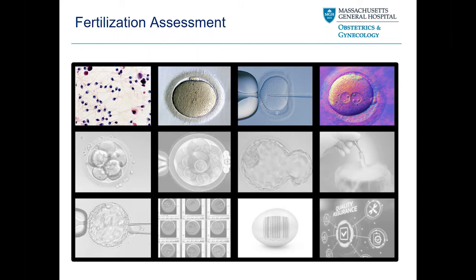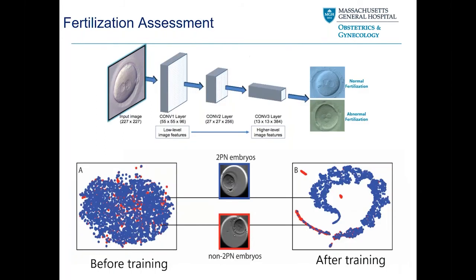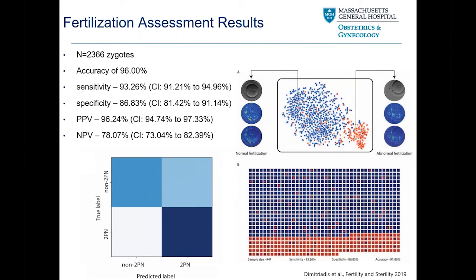Another daily task is fertilization assessments. We consider a 2PN embryo as normal, and anything outside that as abnormal and probably not suitable for embryo culture. We trained an AI system using eggs at 16 hours post-insemination as input, with output being whether they fertilized normally or abnormally. It performed quite well, with an accuracy of 96% when training these systems.